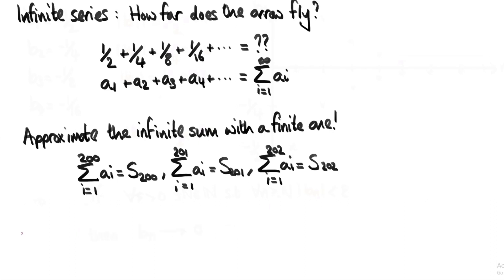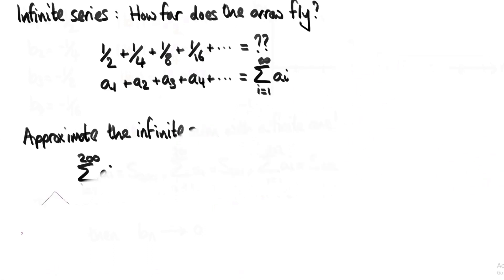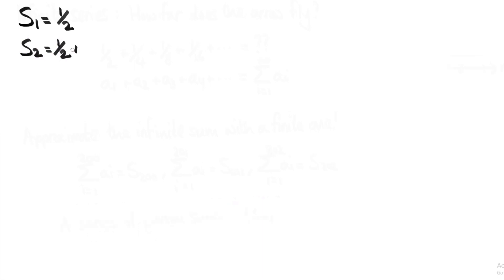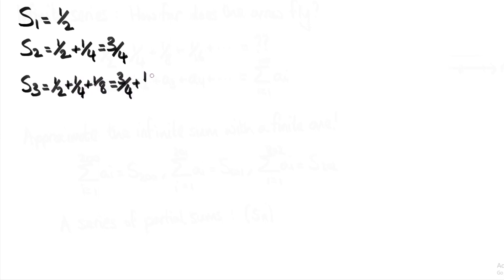Let's look at the first few terms of this sequence to spot a pattern. S₁ is just a half. S₂ is a half plus a quarter, which is three quarters. S₃ is a half plus a quarter plus an eighth, which is three quarters plus an eighth, which is seven over eight. S₄ is 15 over 16. So what do you think Sₙ is going to be — can you see the pattern?